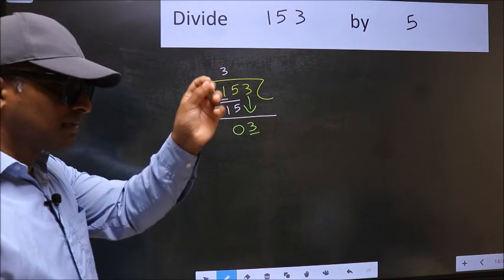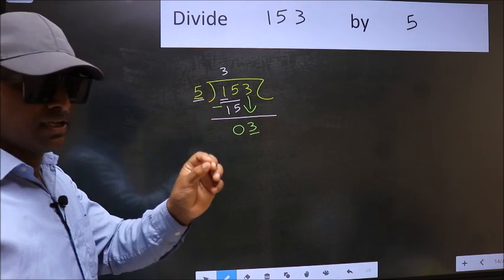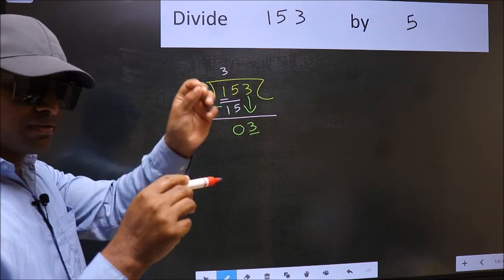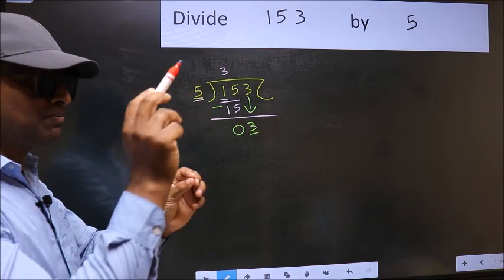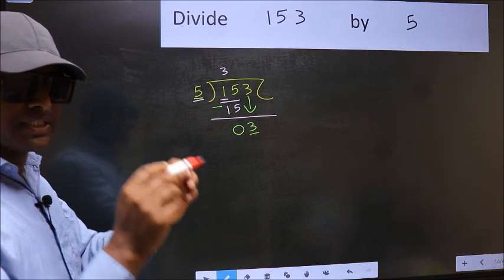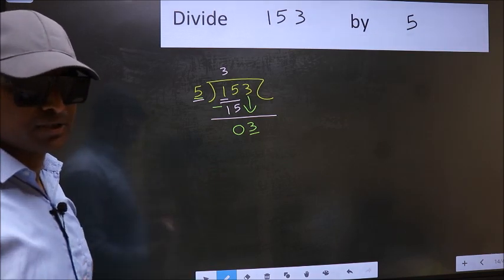I repeat: bringing the number down and also putting the dot and taking 0 - both in the same step - you are not supposed to do.